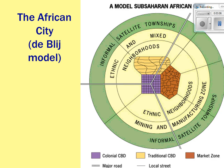Another key characteristic of the sub-Saharan African city is its ethnic and mixed neighborhoods — it's a very divided city based on race or ethnicity. The mining and manufacturing zone draws workers from satellite townships and ethnic neighborhoods. White neighborhoods tend to be closer to the colonial CBD and farther from the shanty towns, though it varies depending on levels of economic well-being.